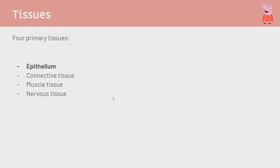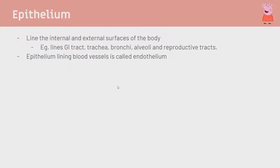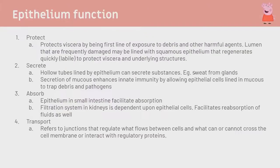Epithelium lines the internal and external surfaces of the body. It lines lumens - hollow tubes inside the body - such as the gastrointestinal tract, airways, trachea, bronchi, reproductive tracts, and blood vessels in the endothelium. It essentially covers the outside of the body and any holes inside the body.